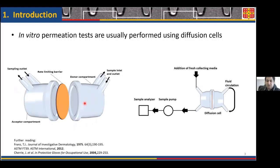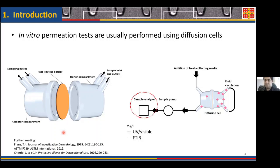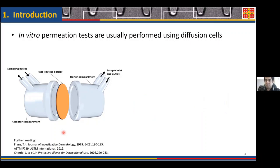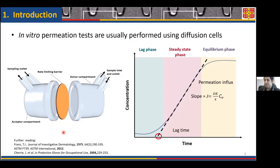Diffusion cells are made of a donor compartment and an acceptor compartment separated by a rate-limiting barrier, which could be a biological tissue of interest or a polymeric membrane. During the test, the substance being tested is inserted inside the donor compartment and allowed to permeate through the rate-limiting barrier to the acceptor compartment, where it is periodically sampled and analyzed by conventional analytical techniques such as UV-visible or FTIR. At the end of the experiment, the concentration in the acceptor compartment versus time is analyzed to produce permeation profiles, from which key parameters such as lag time and permeation rate (influx) are extracted.